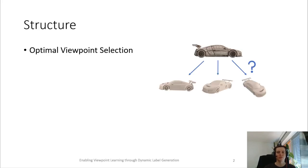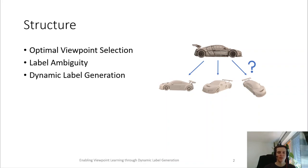My talk will be structured as follows. First I want to introduce the problem of optimal viewpoint selection and motivate using deep learning to solve this task. Then I want to talk about label ambiguity, which is the main challenge when trying to learn optimal viewpoint selections. Then I want to present our proposed solution, which is the Dynamic Label Generation. Finally, I want to present the results of the experiments in our paper.